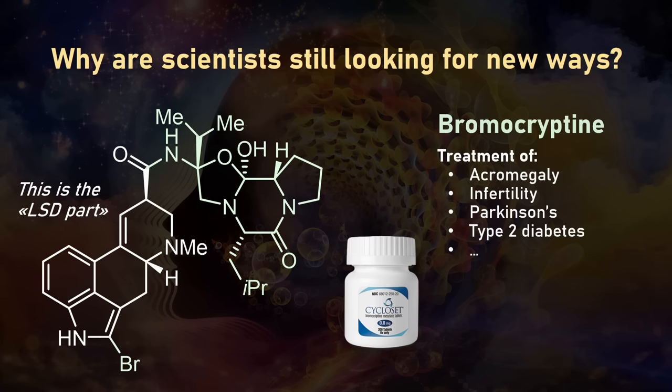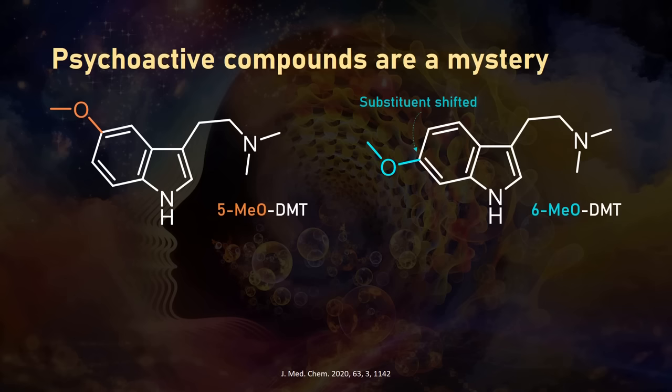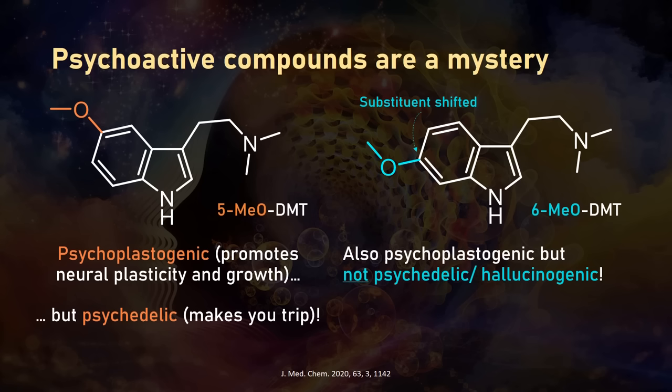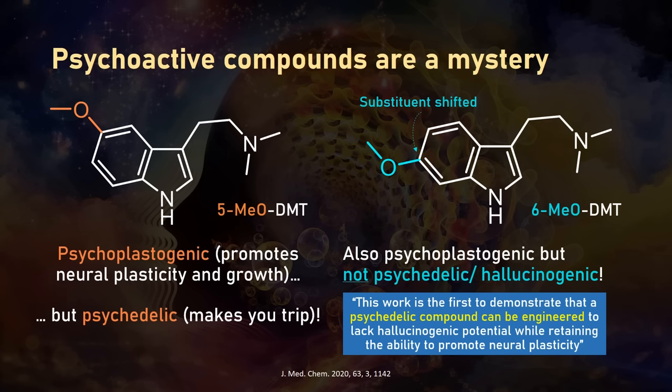In 2020, there was an interesting structure-activity relationship study that showed for the first time that psychedelic compounds, such as derivatives of DMT, can be engineered to lose hallucinogenic side effects while retaining their useful psychoplastogenic properties. The 5-methoxy DMT gives you one hell of a trip, whereas the isomer with the methoxy substituent shifted by just one carbon does not. While this might be disappointing for some of you, it's obviously better if patients are not hallucinating weird stuff after taking their pills.